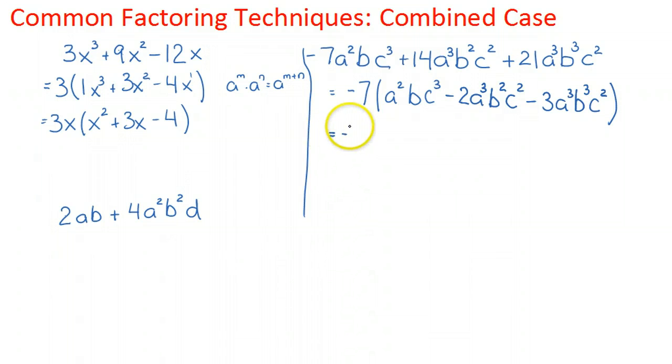Now that I've factored that out, I'm going to look at the unknown values. If I have an a in each case, and I look at the lowest power is a², so I can factor a². That's going to give me bc³ minus 2, and then a times a² is a³, so b²c² minus 3, and then a times a² gives me a³, and then we have b³c².